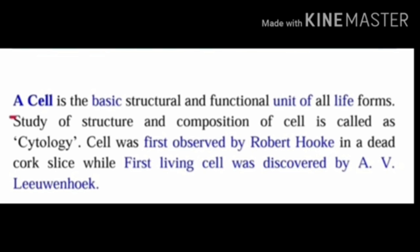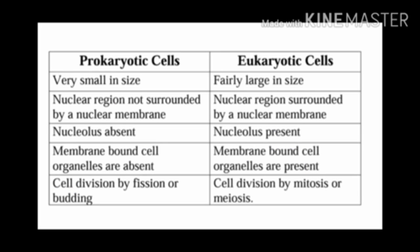Now we know about how many types there are. There are two types: Prokaryotic cells and Eukaryotic cells. Prokaryotic cells means primitive — which is the starting point. After a long interval of time, through development and evolution, new cells formed and we call those Eukaryotic cells.